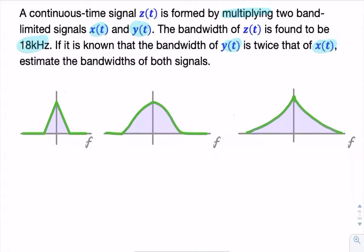We know nothing about x and y, so let's sketch arbitrary spectra for these signals to visualize them. I'm going to use the Fourier transform, using f rather than omega, because we're given the bandwidth in hertz rather than radians per second. That's x of f, y of f,